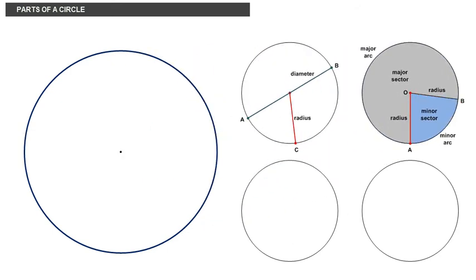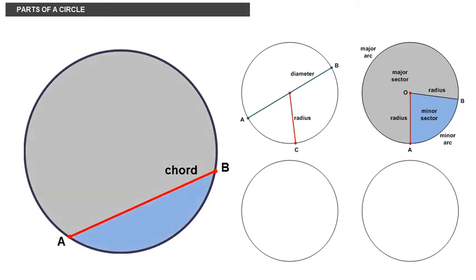Chord and segments. A chord is a line segment drawn from one point A on the circumference to another B that cuts a circle into two parts called segments. A segment is a region that is bounded or enclosed by a chord and an arc subtended by the chord.